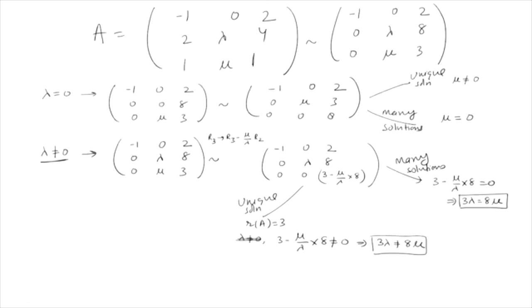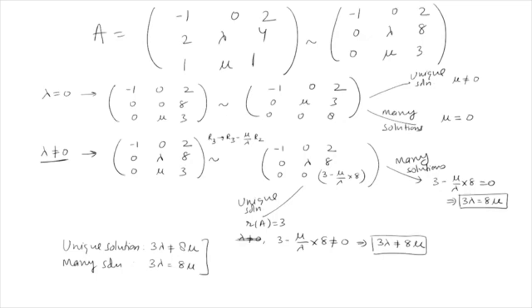Combining both cases (λ = 0 and λ ≠ 0), the unified condition is: for unique solution, 3λ ≠ 8μ; and for infinitely many solutions, 3λ = 8μ. In this way we can find the conditions on λ and μ for the system to have unique or infinitely many solutions.